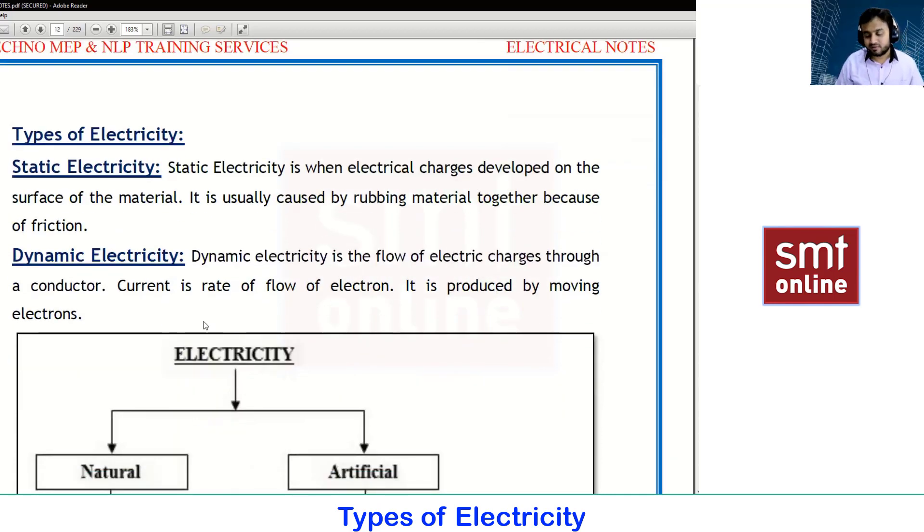Next, talking about types of electricity. As we are going to deal with electricity in detail, we have to understand how many different types of electricity we have. First is static and the next is dynamic. The name itself indicates - static means we are having some amount of energy on the surface of the material.